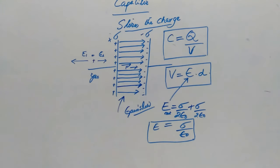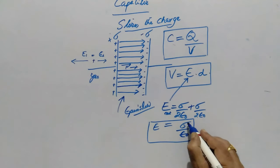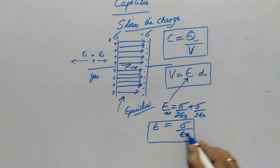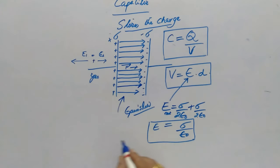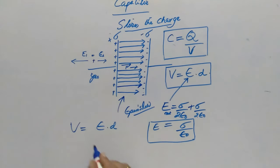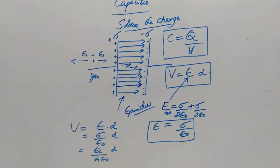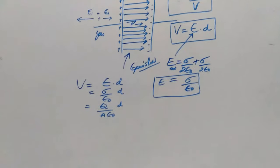This exercise we have already done in the applications of Gauss's law. Now, knowing the value of E, we write sigma as charge per unit area. Multiplying by D gives the potential: V = E × D = (sigma/ε₀) × D = Q/(A × ε₀) × D. This is the value of potential.